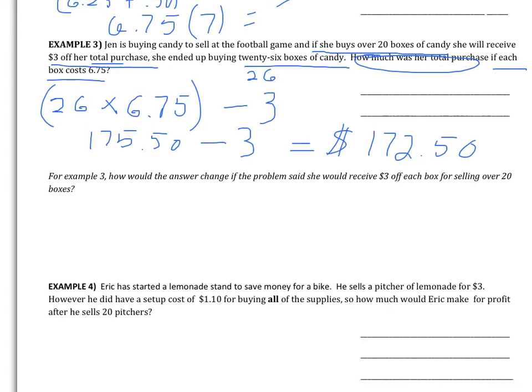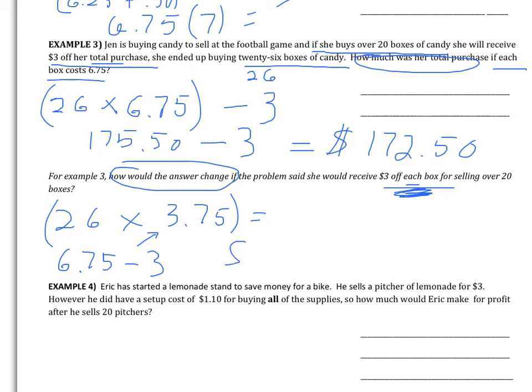Alright, let's read this next part. For example three, how would the answer change? So that's our question. The problem said she would receive $3 off each box for selling over 20. That is the key. That's the difference, okay? It's off of each box. So we can think about it this way. How much did each box actually cost, now that she got the discount off of each box? Well, so we're still ordering 26. Okay, now each box, it's not $6.75 anymore. It's that $6.75 minus the $3 off each box, okay? So each box will actually cost $3.75. Okay, when you do that, you get an answer of $97.50. Okay, that's your answer for that one.